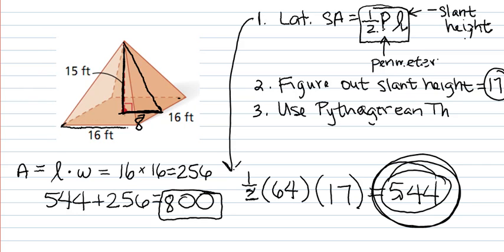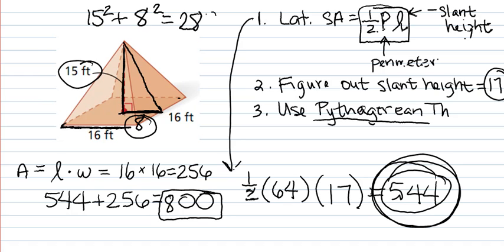And then I used the Pythagorean theorem, which is step 3, and I said 15 squared plus 8 squared. That gave me 289, so this was 17.